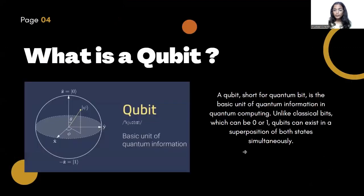So what is a qubit? A qubit, short for quantum bit, is the basic unit of quantum information in quantum computing. Unlike classical bits which can be zero or one, a qubit can exist in a superposition of both states simultaneously.